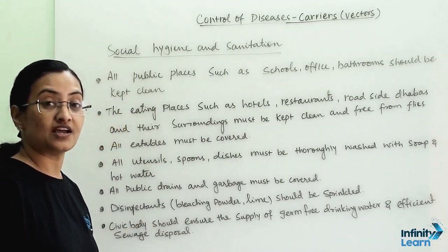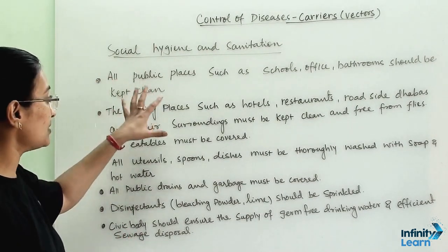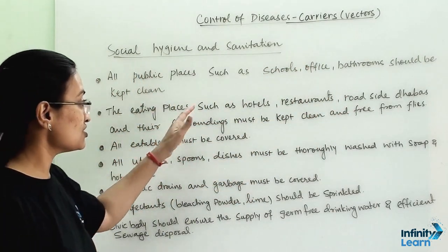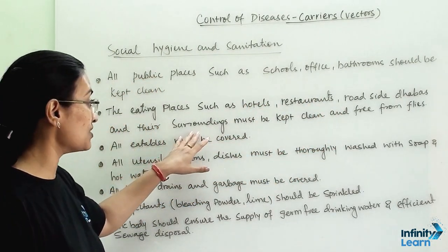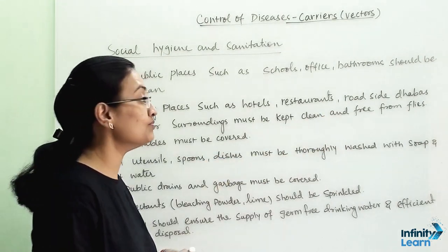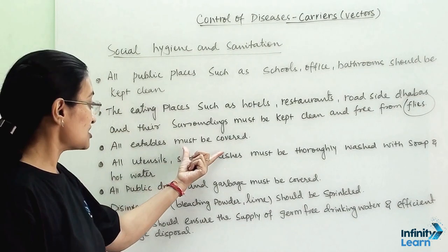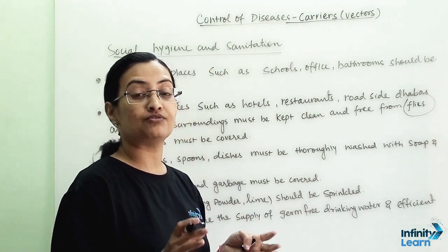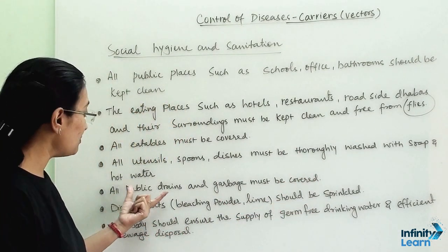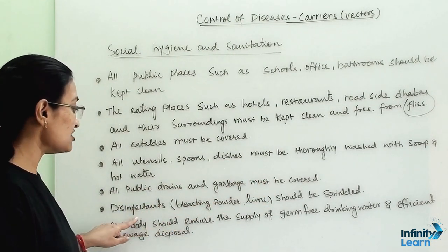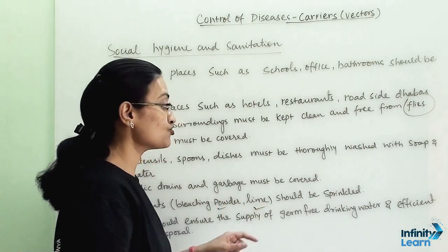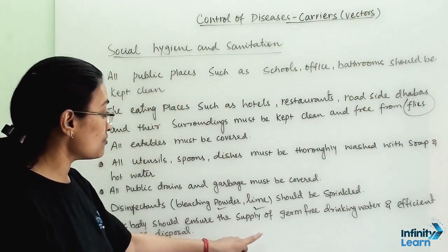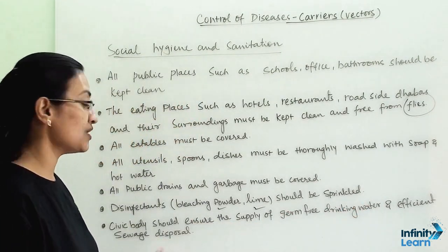Let us first talk about social hygiene and sanitation. All public places such as schools, offices, bathrooms, and theatres should be kept clean. Eating places such as hotels, restaurants, and roadside dhabas and their surroundings must be kept clean and free from flies. All eatables must be covered, and all utensils, spoons, dishes, and bowls must be thoroughly washed with soap and preferably with hot water. All public drains and garbage must be covered, and disinfectants like bleaching powder and lime should be sprinkled to control the growth of infectious germs. The governing body should ensure the supply of germ-free drinking water and efficient sewage disposal.